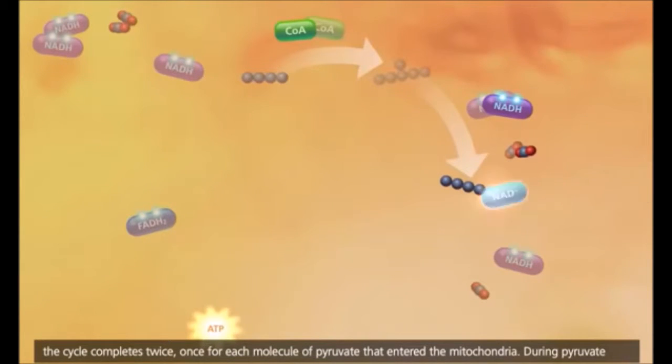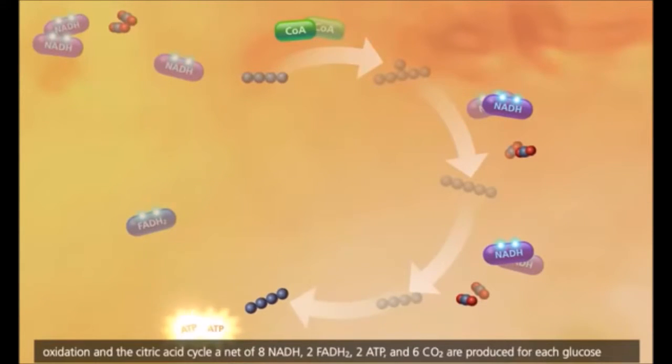With two acetyl-CoA molecules, the citric acid cycle produces two molecules of ATP, six molecules of NADH, and two molecules of FADH2.